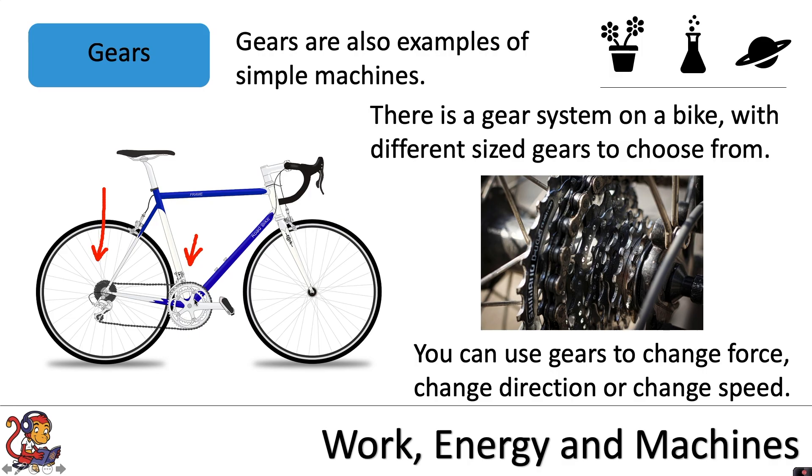When going uphill, it's best to choose the smallest gear at the front and the largest gear at the rear. As the front gear is small, it means it takes less force to turn one full rotation of the pedals.